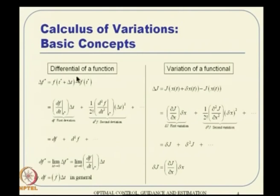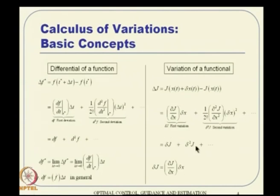We discussed the differential of a function and variation of a functional, and carried out the algebra using Taylor series. We learned an expression for delta f, and it turns out that when delta t goes to 0, we end up with df. In general, df is something like f-dot times delta t. Similarly, you can take the first variation and second variation, where the first variation is computed in this way. By default, when someone says 'variation,' it means first variation. We also gave examples of how to compute these.